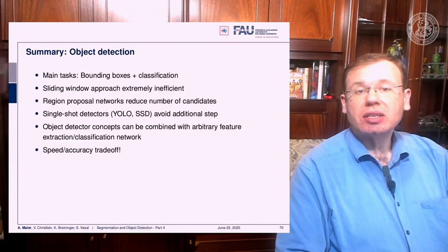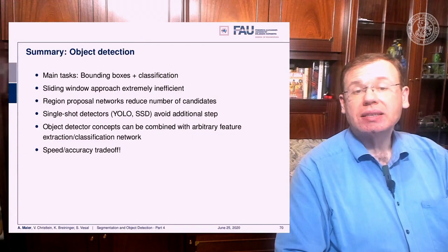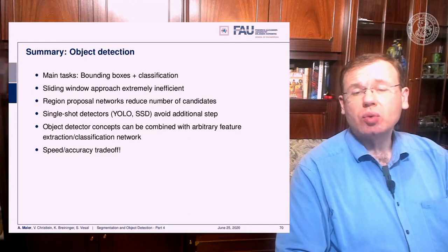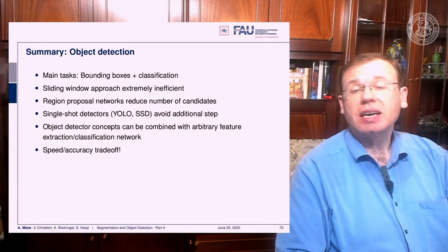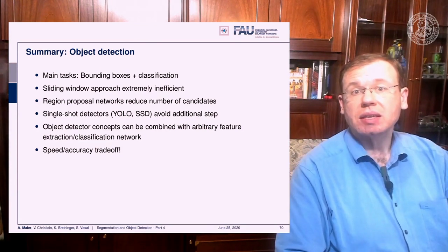To summarize object detection: the main task is detecting bounding boxes with an associated classification. The sliding window approach was extremely inefficient. Region proposal networks reduced the number of candidates, but for real-time performance you need single-shot detectors like YOLO to avoid additional steps. Object detector concepts can be combined with arbitrary feature extraction and classification networks. Keep in mind the speed-accuracy trade-off: reducing the number of predicted bounding boxes makes inference faster, but you may miss true positives.